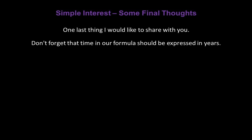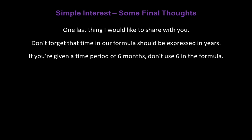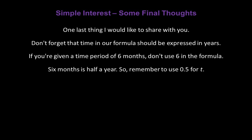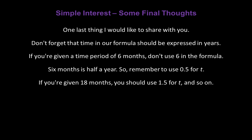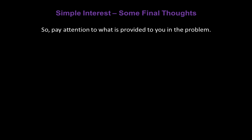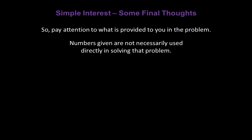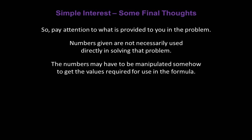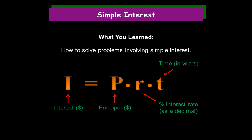One last thing: don't forget that time in the formula should always be expressed in years. So if you're given a time period of six months, don't use six in the formula — convert it to half a year and use 0.5 for T. Likewise, if you're given 18 months, use 1.5 for T. Pay attention to what's provided in the problem, as numbers may have to be manipulated to get the values required for use in the formula. Congratulations! You've learned how to solve problems involving simple interest.